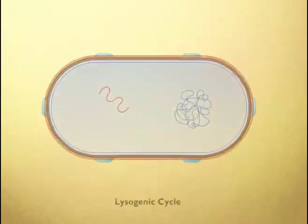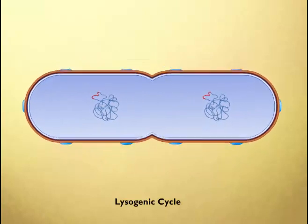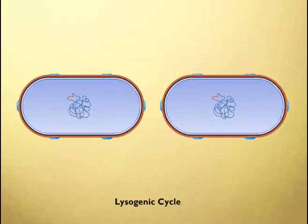In the lysogenic cycle, the phage DNA is not replicated or transcribed. Instead, the phage DNA integrates into the host cell genome. The host cell can then replicate, carrying the integrated phage genome. The integrated DNA is referred to as prophage DNA, and the host cells carrying the prophage DNA are said to be in the lysogenic state.